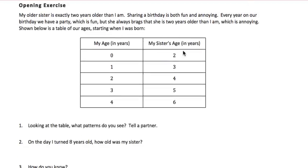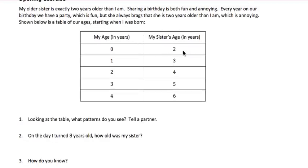Looking at the opening exercise, we have a table set up that shows my older sister is exactly two years older than I am. Sharing a birthday is both fun and annoying — every year on our birthday we have a party, which is fun, but she always brags that she is two years older than I am, which is annoying. Shown below is the table of our ages, starting when I was born: zero and two, one and three, et cetera.